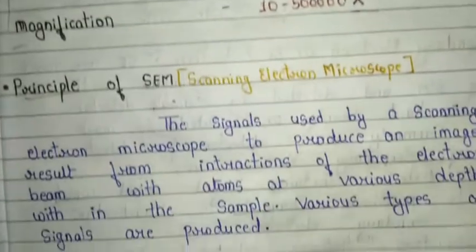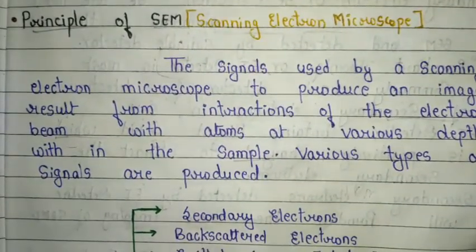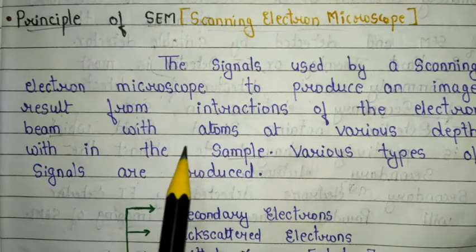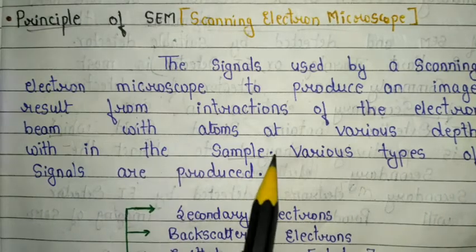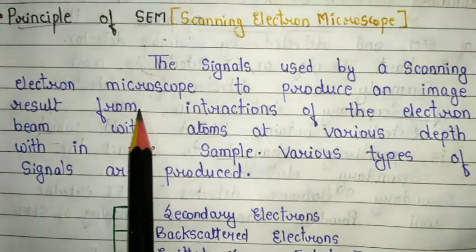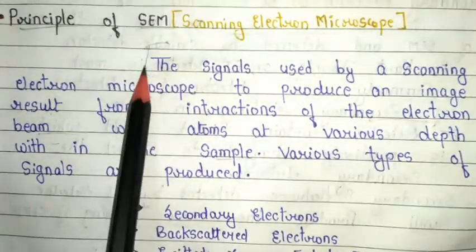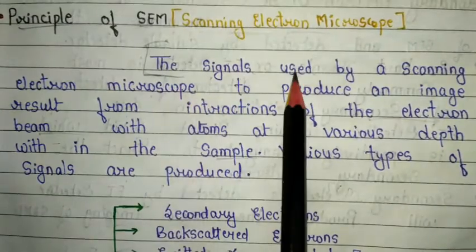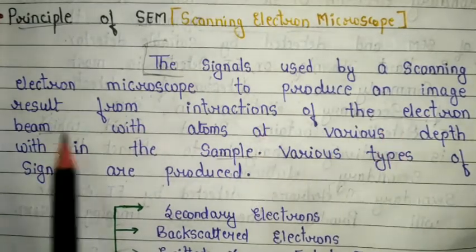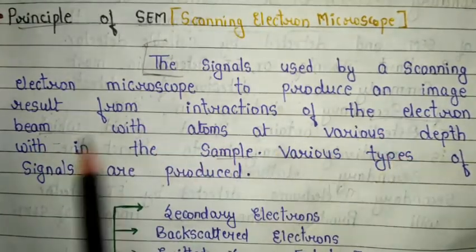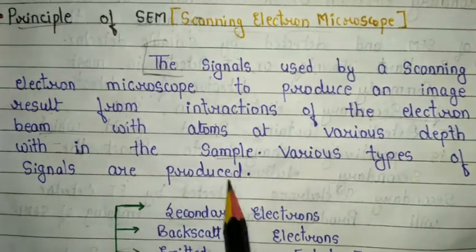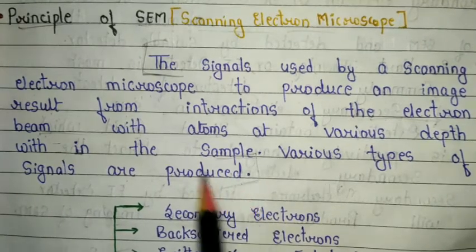Now the principle, which is very important for semester exams and competition exams as well as MSc second semester examinations. The principle of scanning electron microscope: the signals used by scanning electron microscope to produce an image result from interaction of the electron beam with atoms at various depths within the sample. Various types of signals are produced. This is the basic theory portion of the principle.